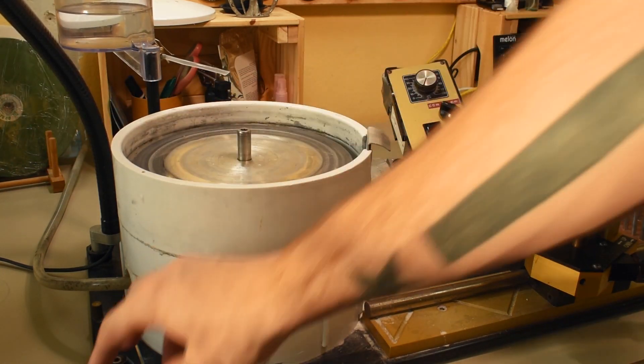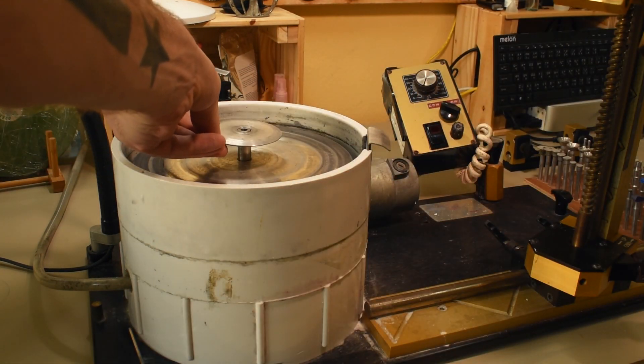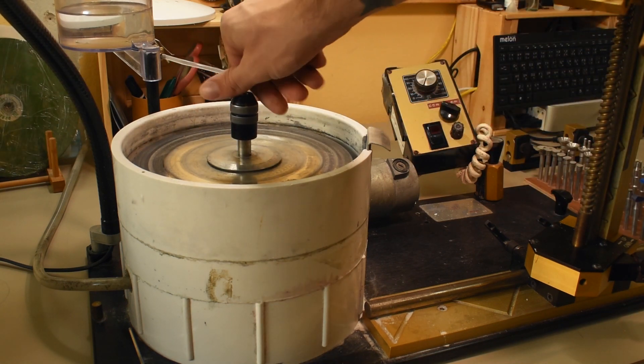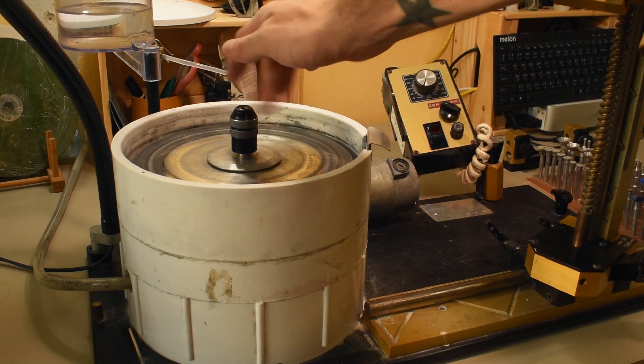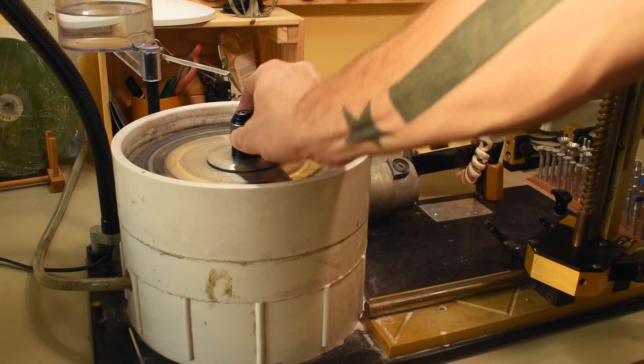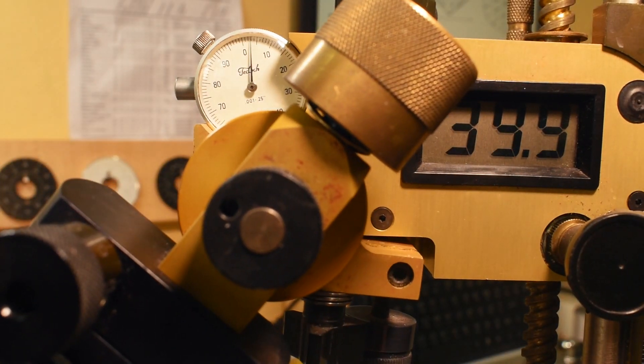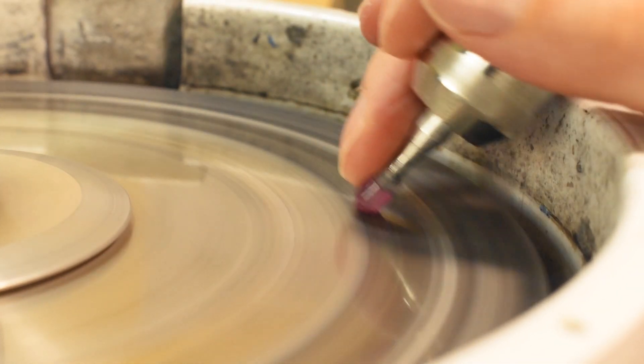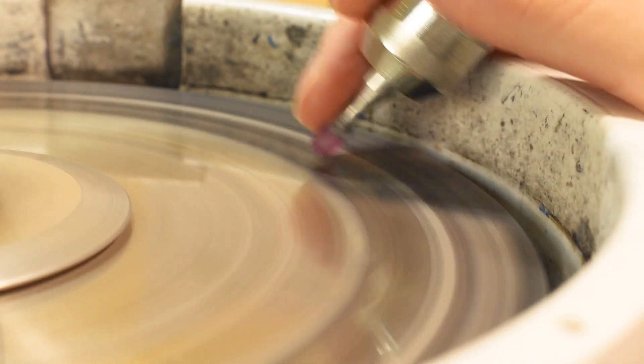Aside from the digital readout, this machine also includes a depth gauge that makes it very easy to cut to the exact same depth for a whole tier without having to check your facets too often. The combination of digital angle readout and depth gauge makes it very easy and fast to cut a perfect stone.